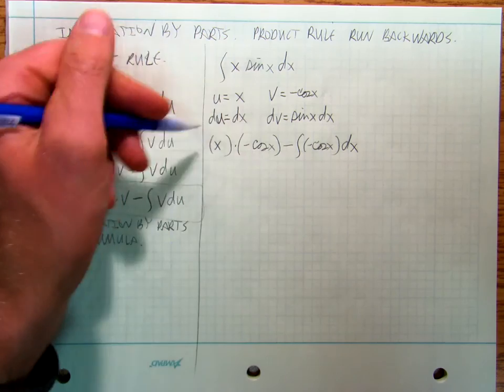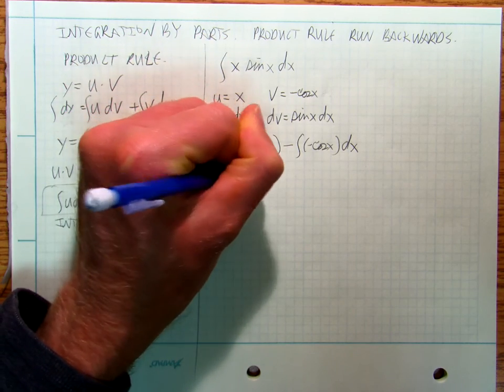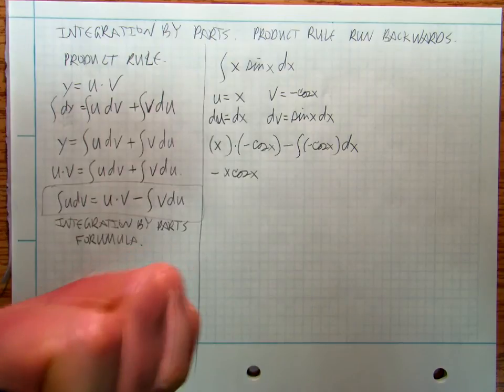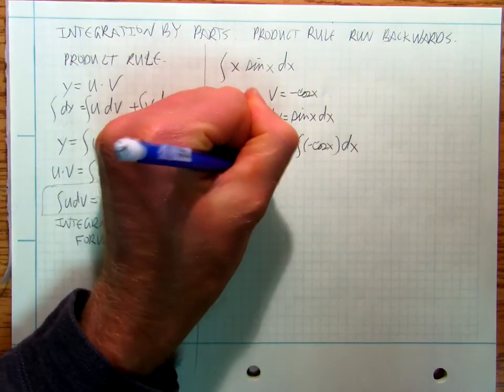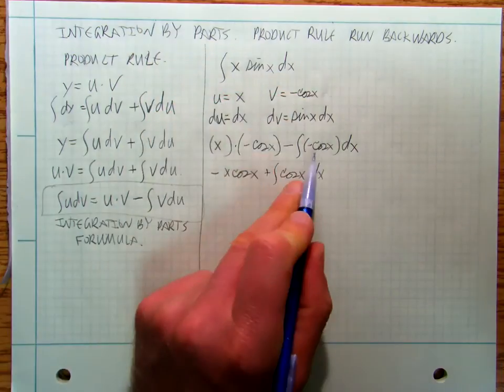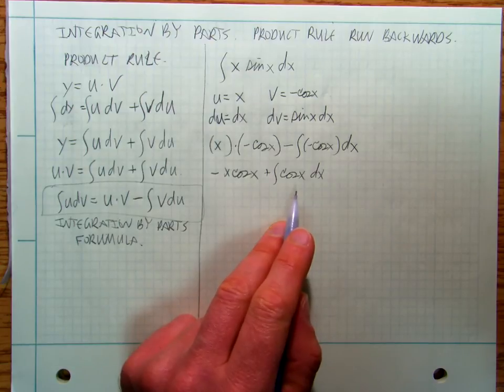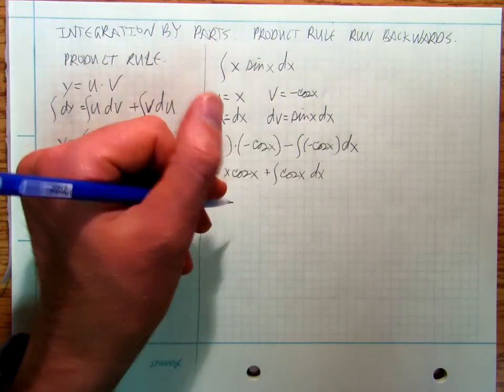Then I clean this up a little bit, so I get negative x cosine x, and then I make that a plus, plus the integral of cosine x dx, because I've got a minus there and a minus there. And I know what the integral of cosine x is, that's just sine x.